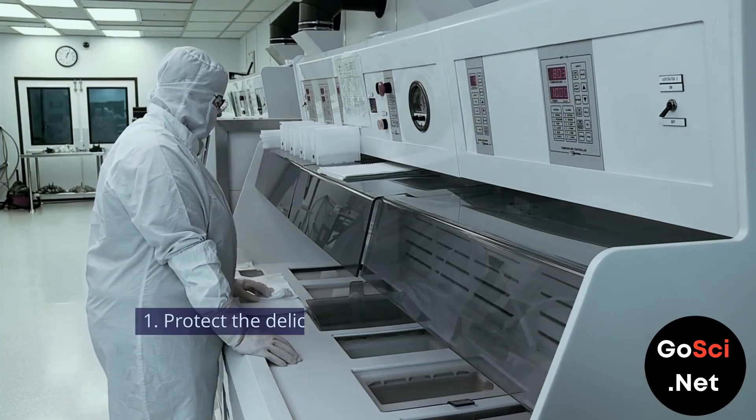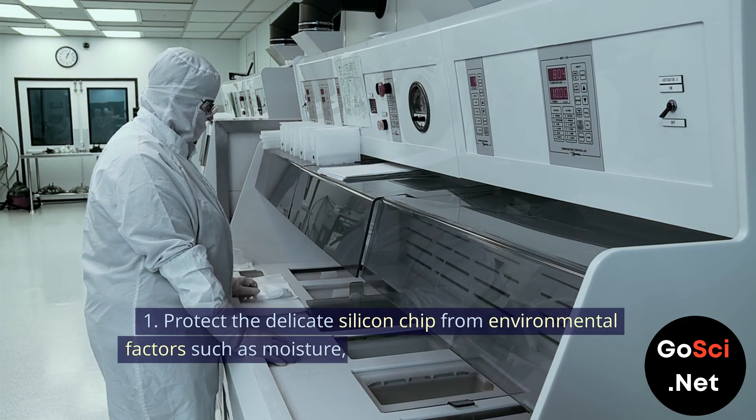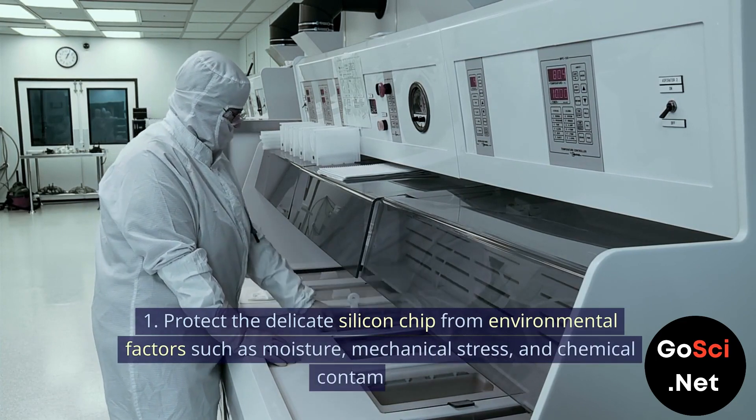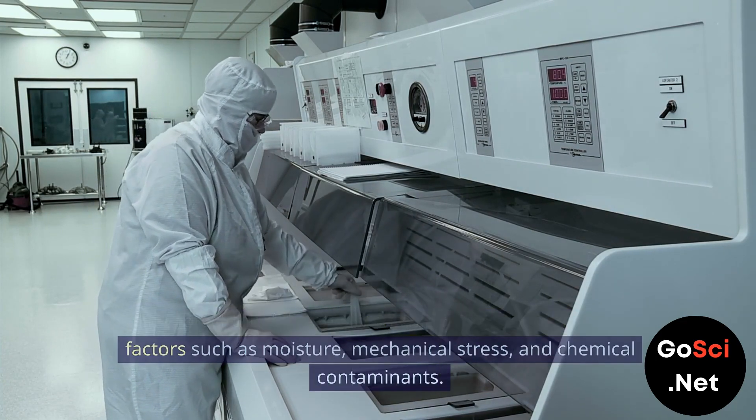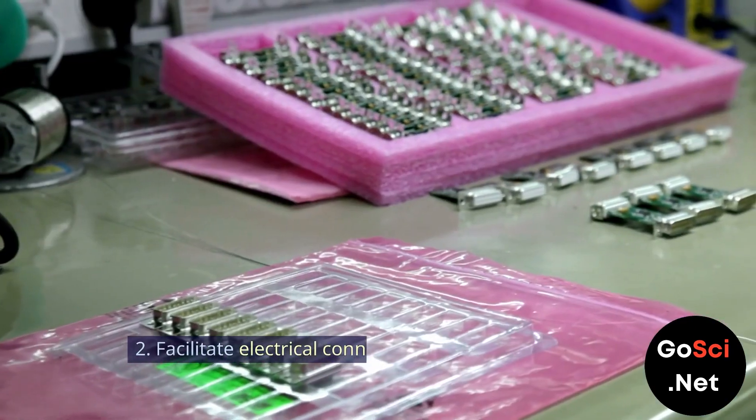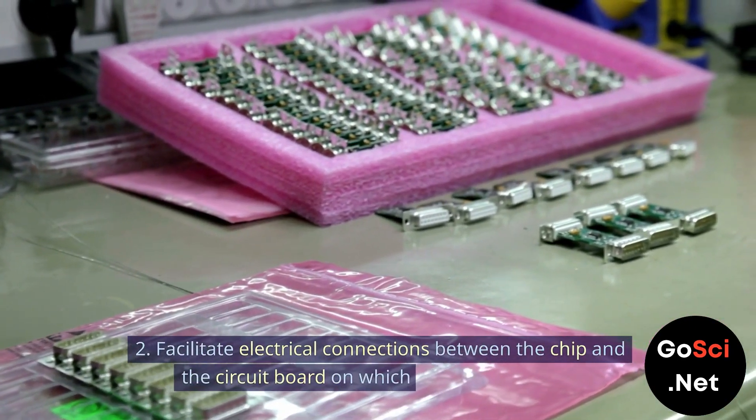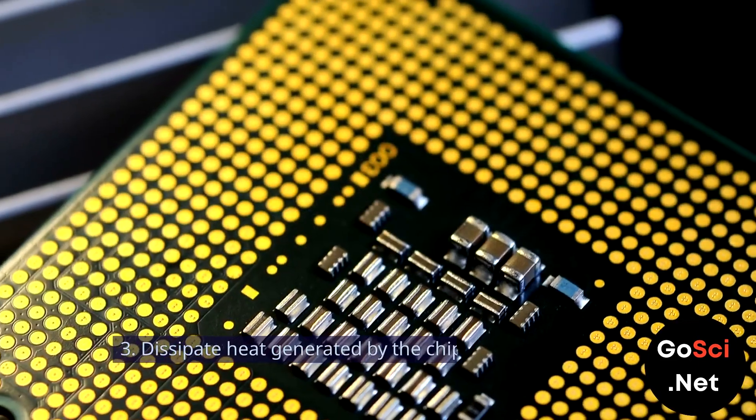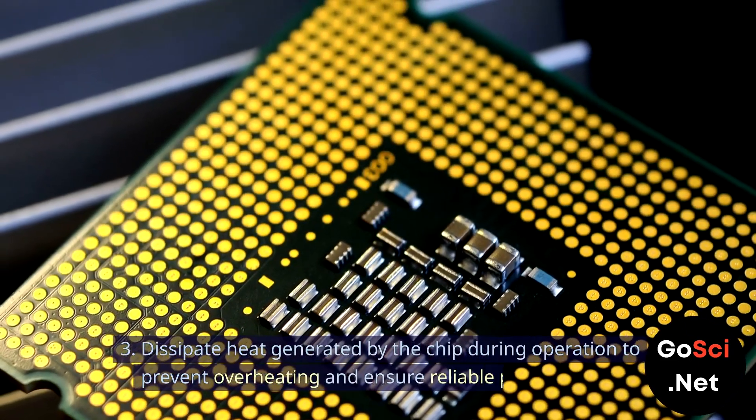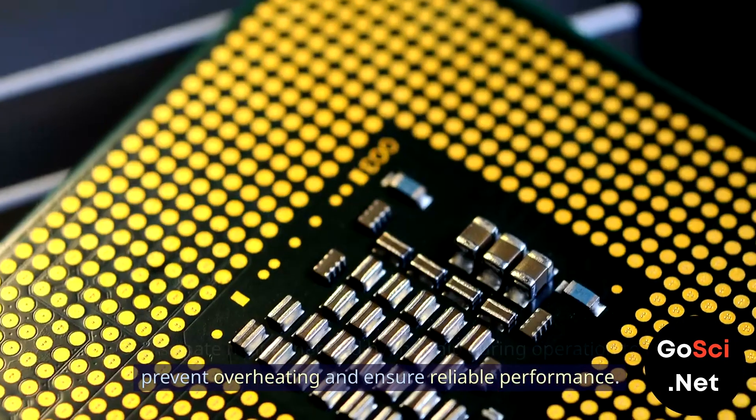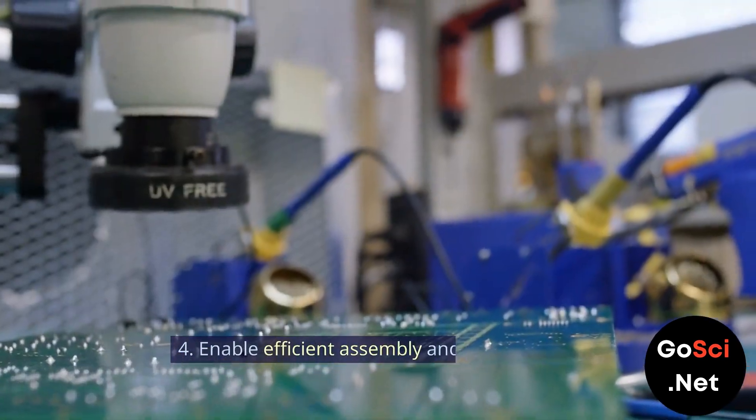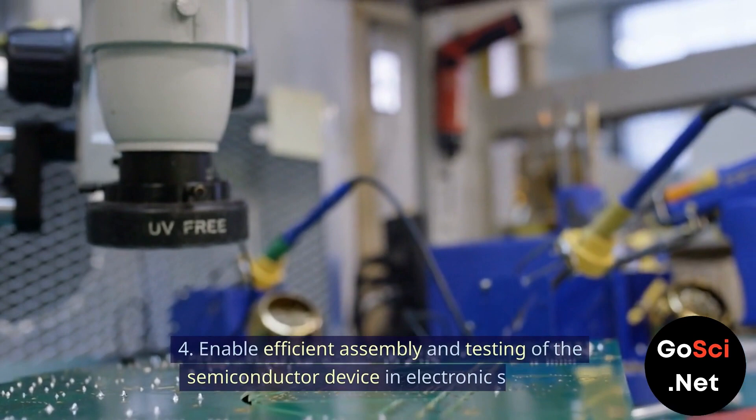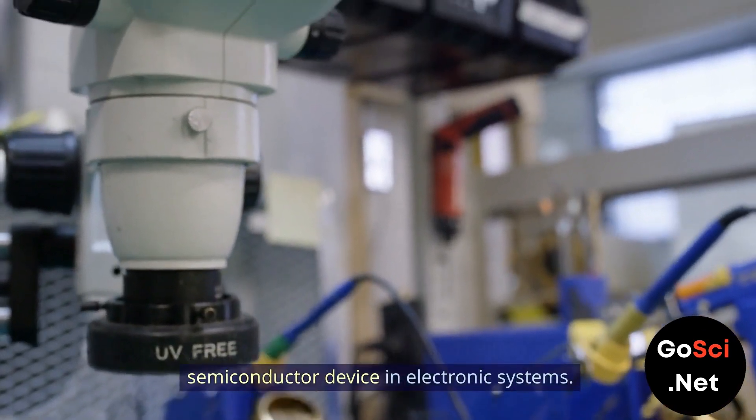1. Protect the delicate silicon chip from environmental factors such as moisture, mechanical stress, and chemical contaminants. 2. Facilitate electrical connections between the chip and the circuit board on which it will be mounted. 3. Dissipate heat generated by the chip during operation to prevent overheating and ensure reliable performance. 4. Enable efficient assembly and testing of the semiconductor device in electronic systems.